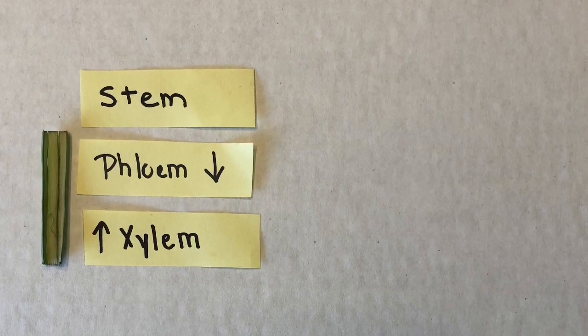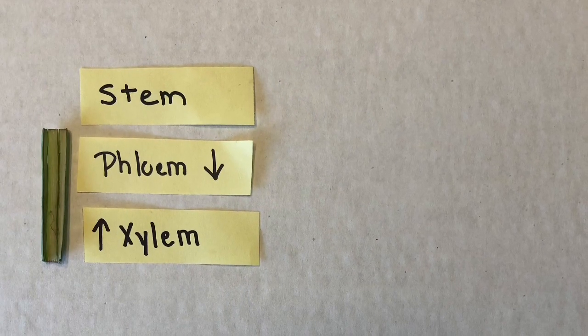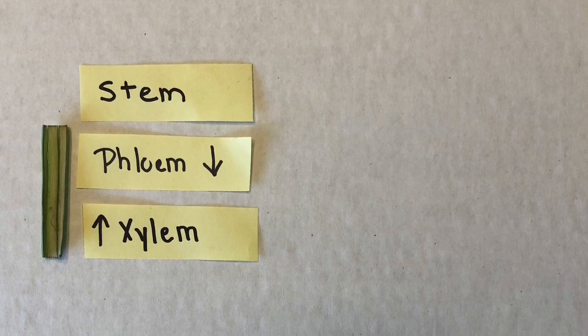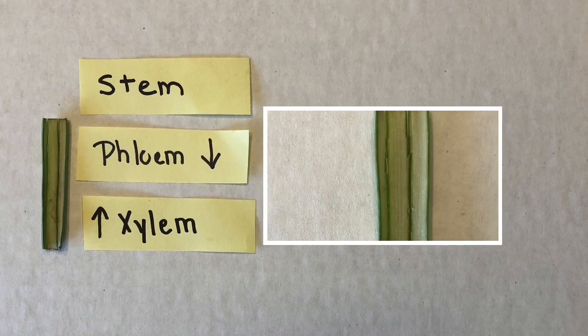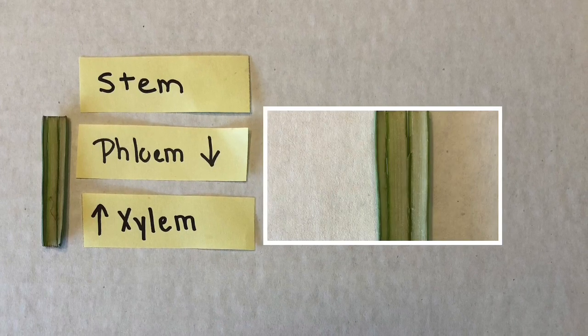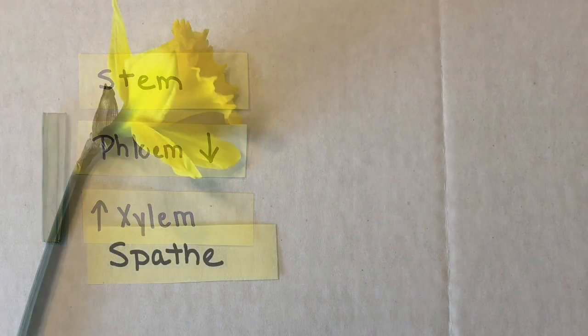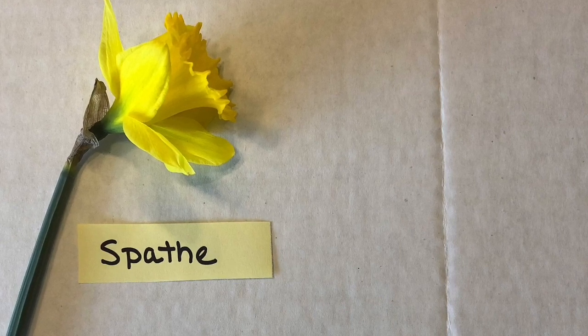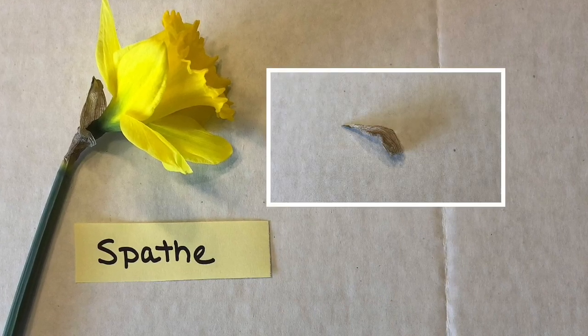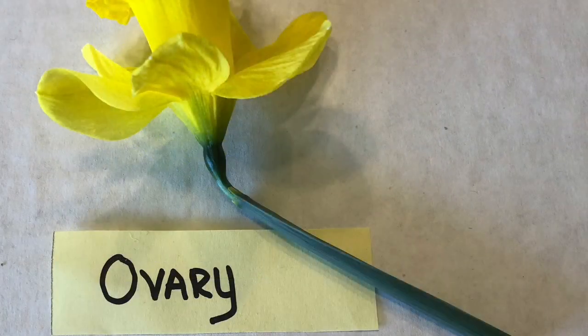The stem supports the flower and also contains tubes called the xylem and the phloem. The phloem brings the food down through the stem; the xylem brings the water up. If you look at the image enclosed, you will see a close-up of the xylem and the phloem. In the bud stage, the flower is protected by a strong thin membrane called the spaythe. Use your scissors and cut away the spaythe. After you remove it, there is a small green, slightly round, swollen part just underneath the flower — that is the ovary, which we'll talk about later.